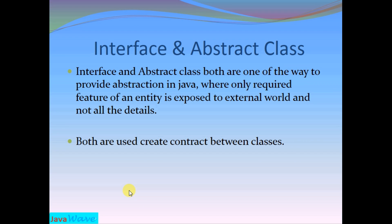What is interface and what is abstract class? Interface and abstract class both are one of the ways to provide abstraction in Java. In abstraction, only the required features of an entity are exposed to the external world and not all the details. Both interface and abstract class are used to create a contract between classes.